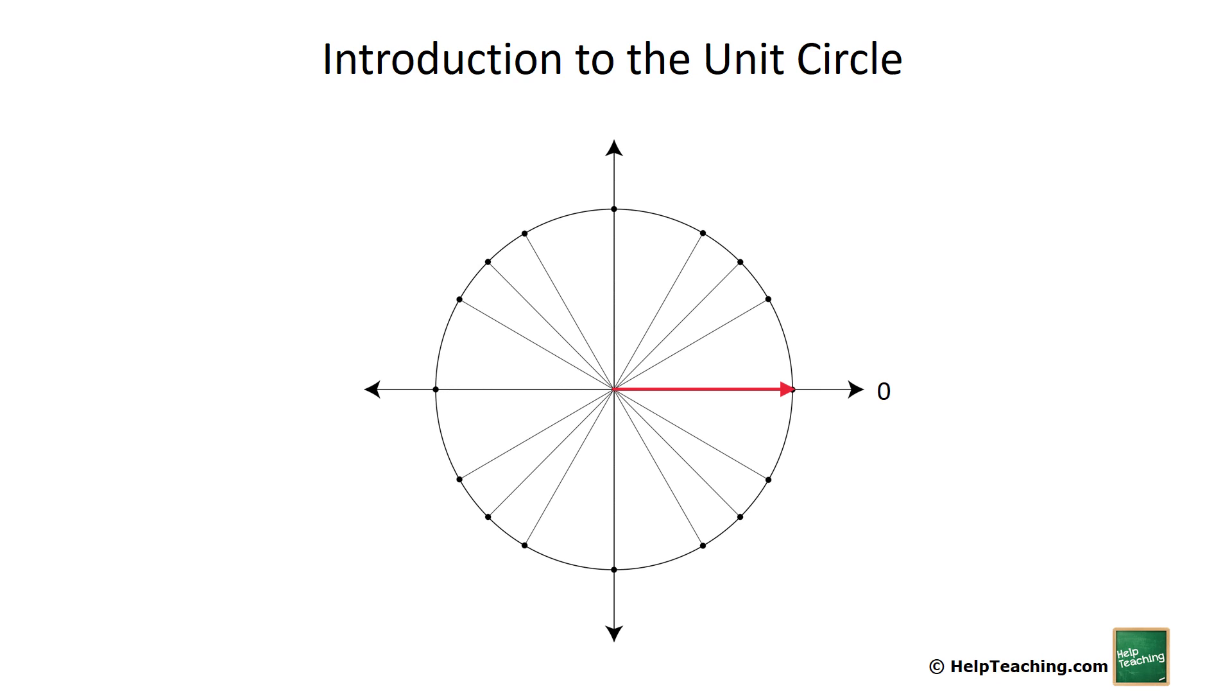To begin, we always start in the initial position which is the three o'clock position. We always rotate in a counterclockwise direction going through quadrants one, two, three, and four back to our initial position again.